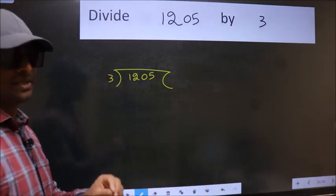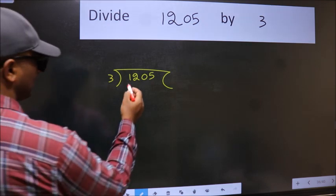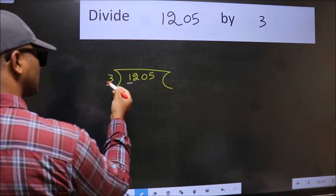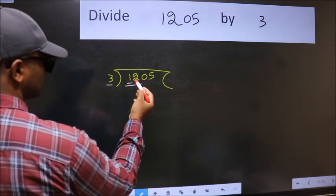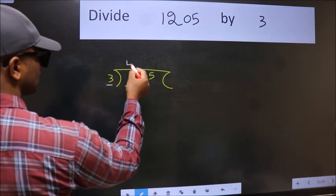This is your step 1. Next, here we have 1 and 3 here. 1 is smaller than 3. So, we should take 2 numbers, 12. When do we get 12 in the 3 table? 3 fours 12.